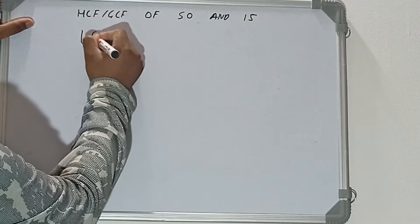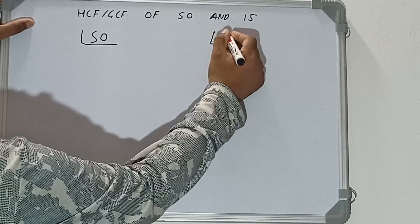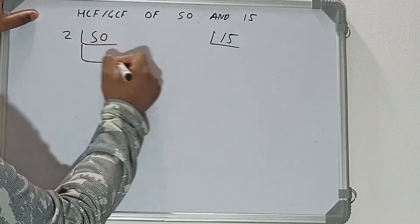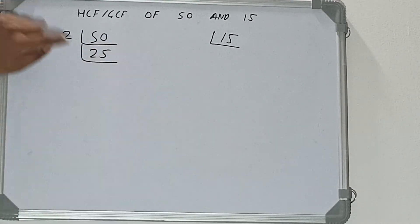First we'll do 50, then we'll do 15. Let's start with the number 50. We'll check with the lowest prime number 2. Is 50 divisible by 2? Yes it is. Divide it and we'll have 25. Is 25 divisible by 2? No it is not. We'll check with the next lowest prime number, which is 3. Is 25 divisible by 3? No it is not.